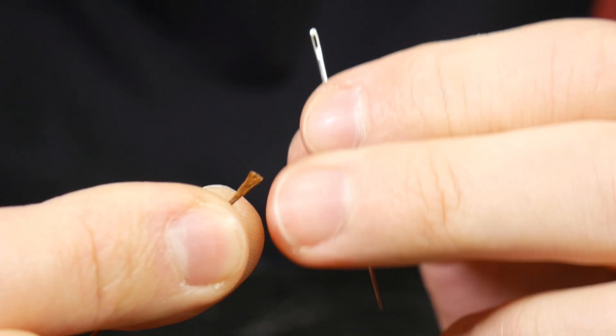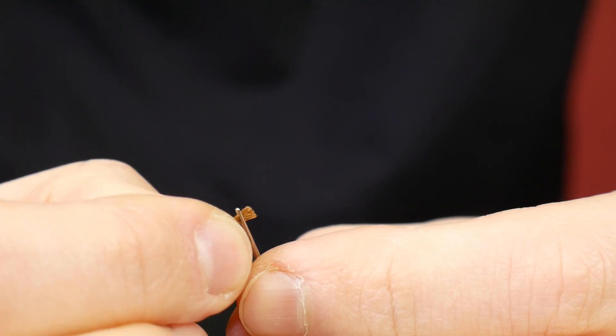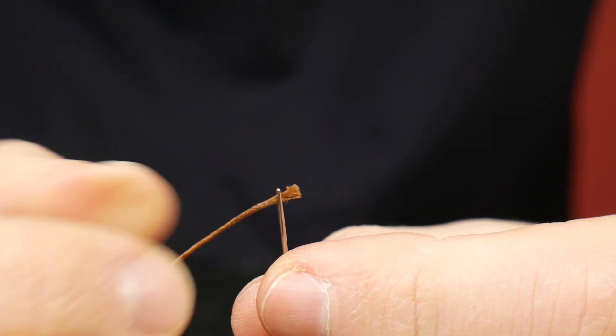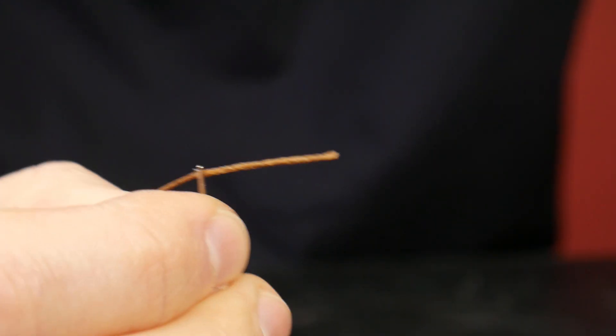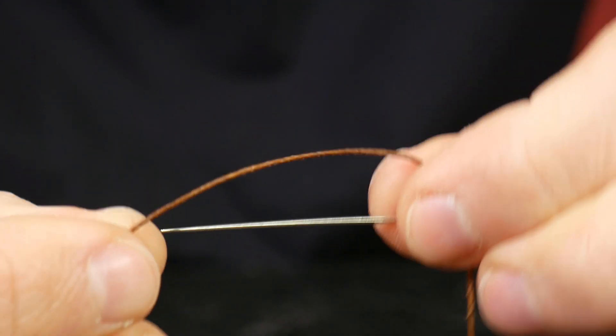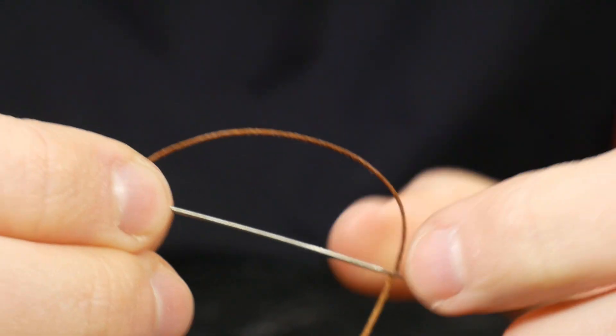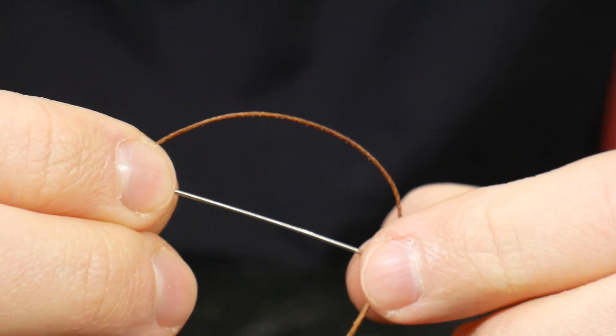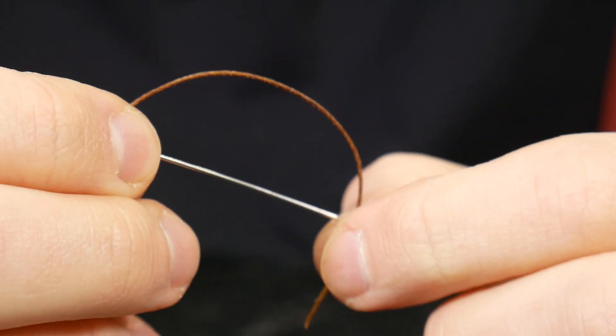And then with that chiseled end, I can place one corner of it into the eye of the needle and then lift up at the same time. Pull through as normal, and then I can lock in my needle as usual. So this is just a much quicker method and requires a little bit less skill than tapering using the knife, and you'll get the exact same result.